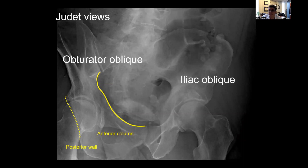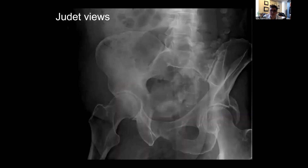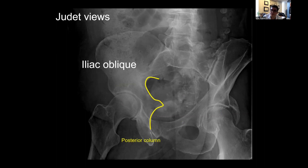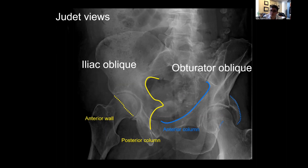On the left hip iliac oblique, there is the posterior column running from the sacroiliac joint along the greater sciatic notch, past the ischial spine, and down to the ischium itself, as well as the anterior wall — and on this view there's no disruption, everything looks fine. On the other side, the iliac oblique of the right hip shows the posterior column intact. Then on the left side, we see the injury — the anterior column is intact, but there's a displaced posterior wall acetabular fracture.